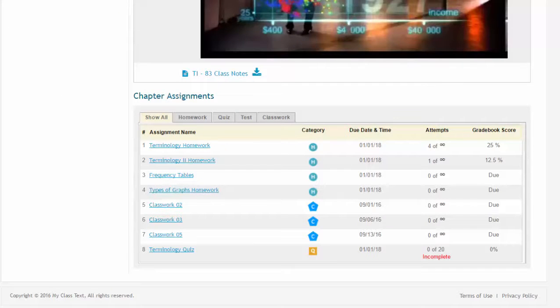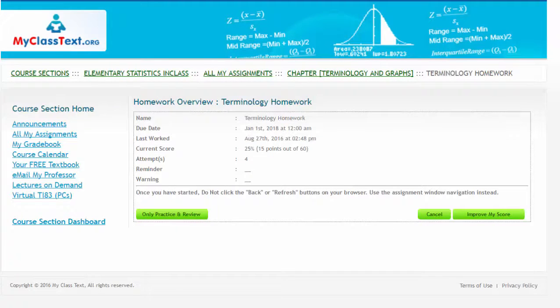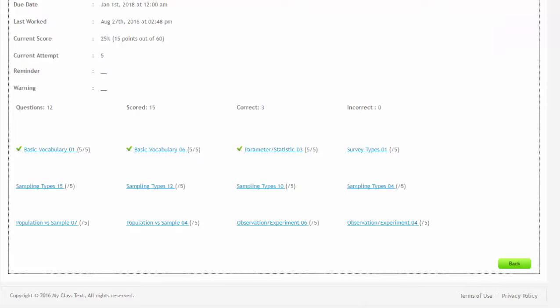When you go back to the homework, you will see the gradebook score as a percent, and when you click on the homework and click improve my score, you will see that the order of the homework questions has not changed.